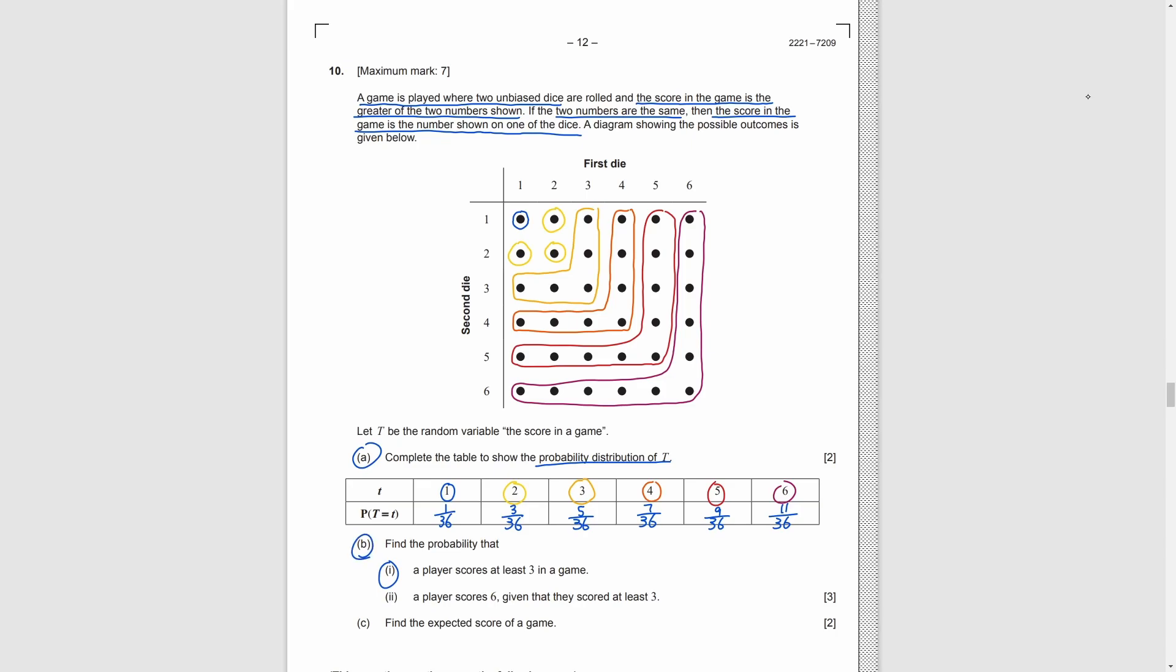Part B, we need to find the probability of scoring at least 3 in the game. That means we need to score 3, 4, 5 or 6 in the game. So, we just need to add the probabilities of these 4 situations together. Next, we need to find the probability of scoring 6 given that they already scored at least 3. As there are 32 cases of scoring at least 3 and 11 cases of scoring 6. So, the final answer is just 11 over 32. Part C, we need to find the expected score of the game. Expected value is just the sum of all the values times their own probabilities together. So, we just use 1 times 1 over 36 plus 2 times 3 over 36 plus etc. Finally, we get 161 over 36.